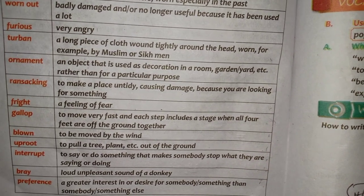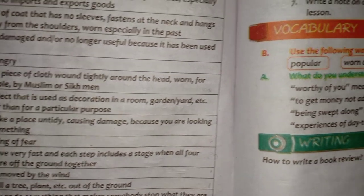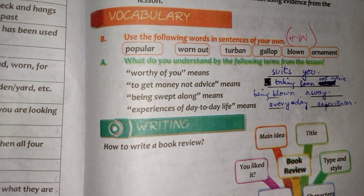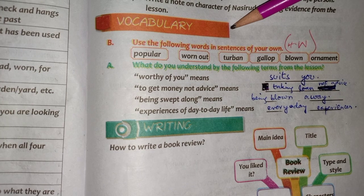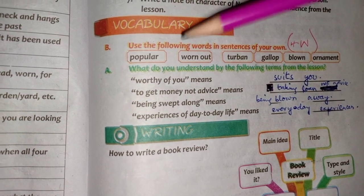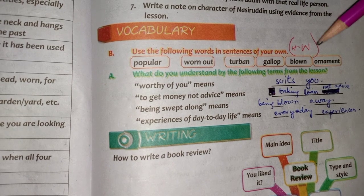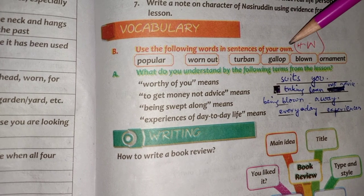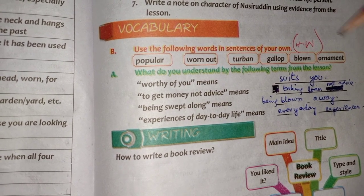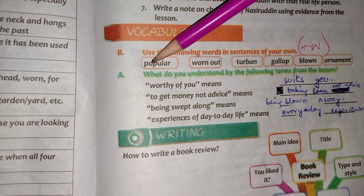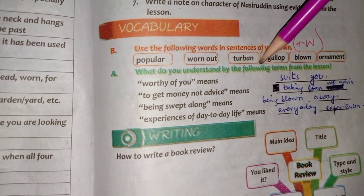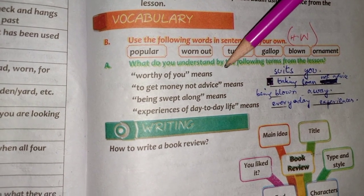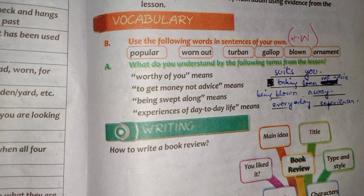Please learn the glossary words thoroughly. Now we'll move to page 60 of unit 6. The next topic is vocabulary. Dear students, Part B of vocabulary is your homework for today — use the following words in sentences of your own. Then come towards Part A: what do you understand by the following terms from the lesson? These terms have been taken from the lesson and you are supposed to write down the meaning of each.